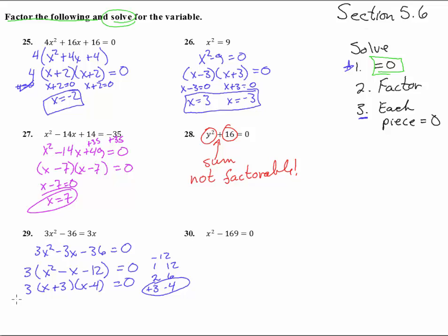Now each piece equals zero. 3 equals zero, that's embarrassing, don't even write that guy down. And then x plus 3 equals zero will give us x equals negative 3. And x minus 4 equaling zero will give us x equals positive 4. So we have two answers, negative 3 and 4 right there. Good.